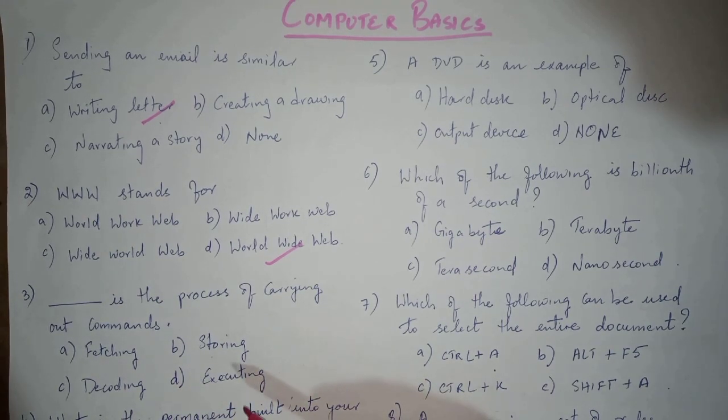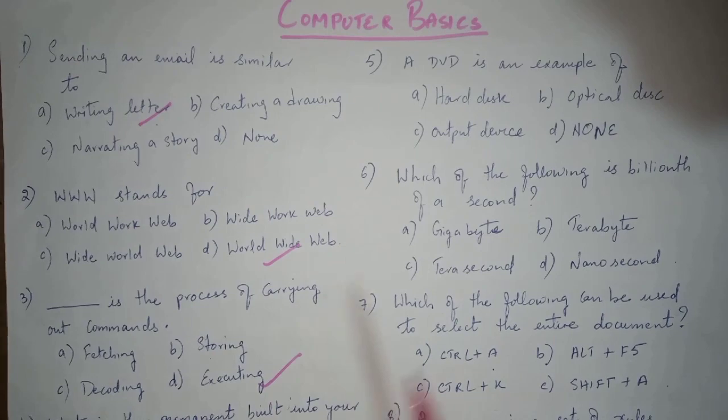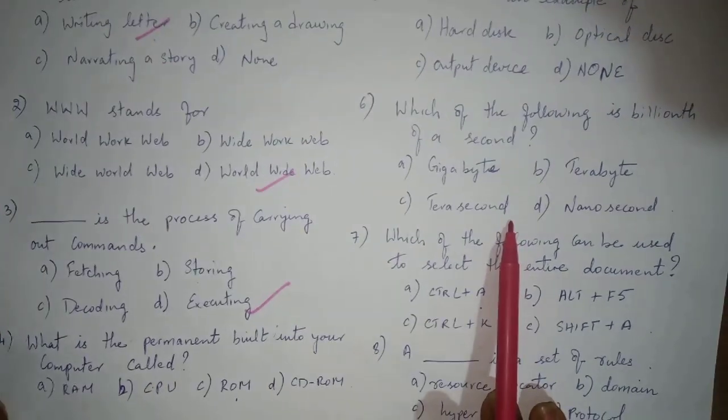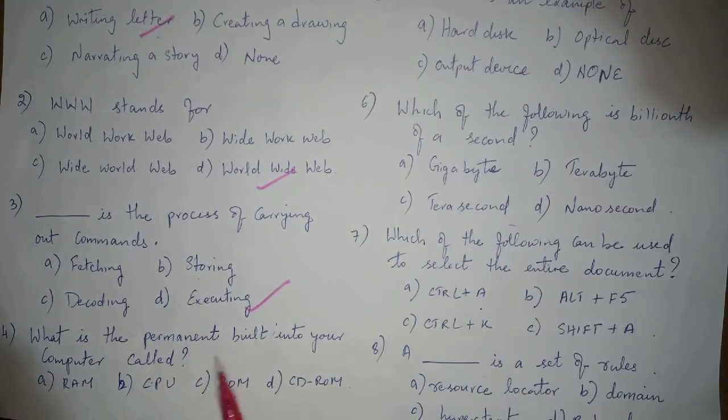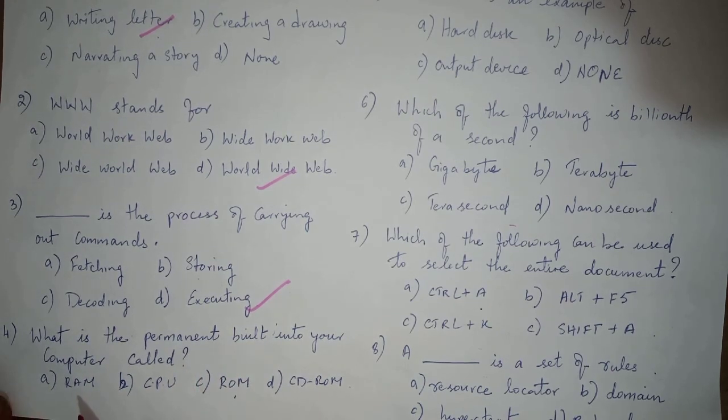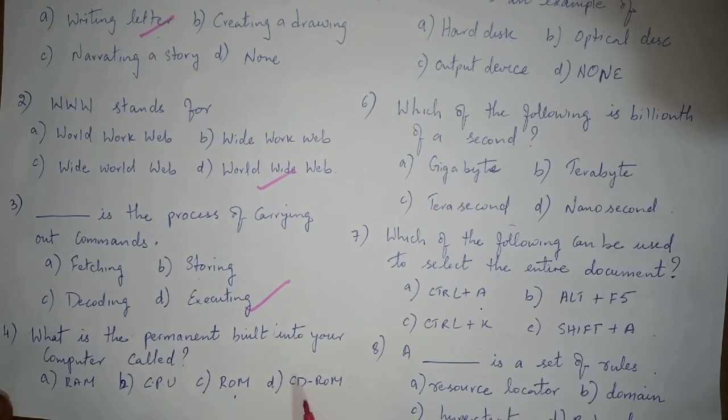Next question is: what is the permanent built into your computer called? The options are RAM, CPU, ROM, CD-ROM. And the answer is option C, ROM.